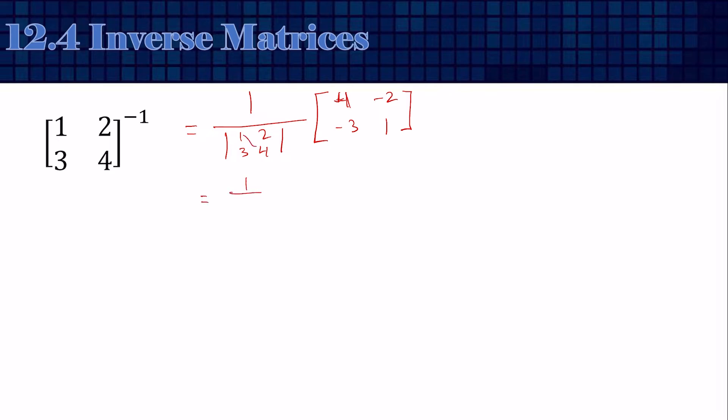So that's 4 minus 6, and 4 minus 6 is negative 2. Then distribute that to everything, so we'll have negative 2, 1, 3 over 2, negative 1 over 2. And that is the inverse.